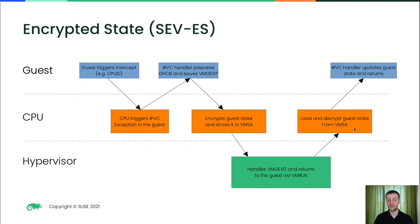On VM run, the CPU loads and decrypts the guest register state from the VMSA and the guest continues executing right after the VMGEXIT instruction, back in the #VC handler. The #VC handler then evaluates the GHCB contents written by the hypervisor, updates its own register state, and returns to the original execution flow that triggered the CPUID intercept. This is how things work with SEV-ES.